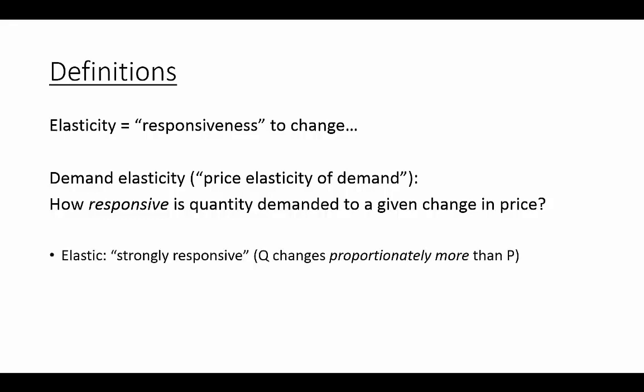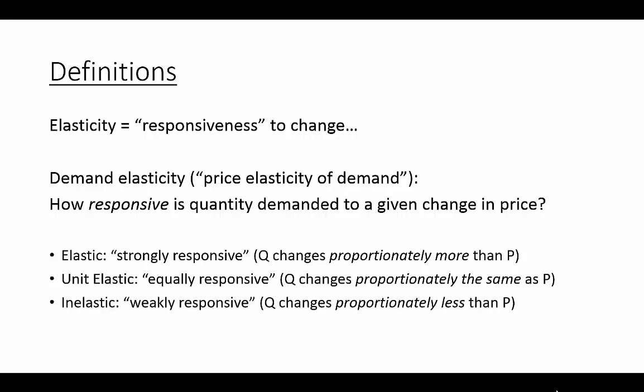Elasticities of demand can be labeled elastic or strongly responsive. That means the quantity changes proportionately more than the price. So if the price goes up by let's say 50%, quantity might go down by something like 90%. Unit elastic, where price and quantity changes are equally responsive. And then inelastic, quantity is weakly responsive to changes in price. Quantity changes proportionately less than the change in price. And when we get into the problems, we'll talk about different kinds of goods that have different elasticities.